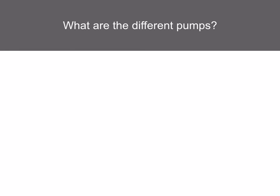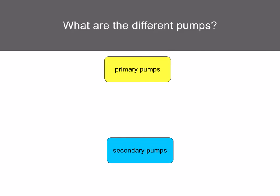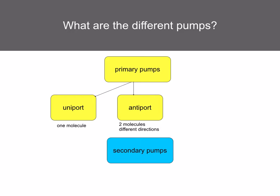Let's have a look at the different pumps. You've got two types: primary and secondary pumps. The primary pumps include uniport pumps, which transport one molecule across the membrane; antiport pumps, which transport two different molecules in different directions; and symport, which pumps two different molecules in the same direction across the membrane. Secondary pumps are indirect active transport.